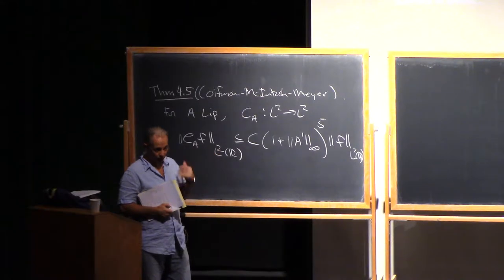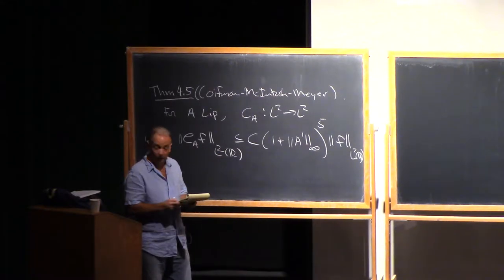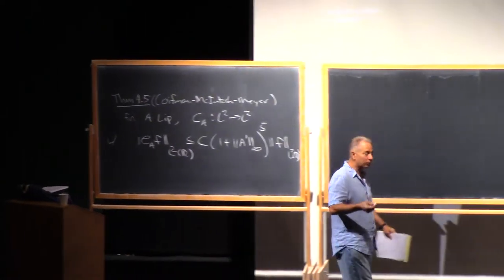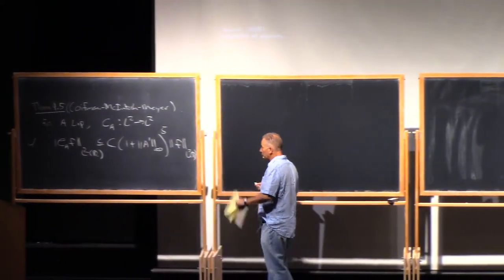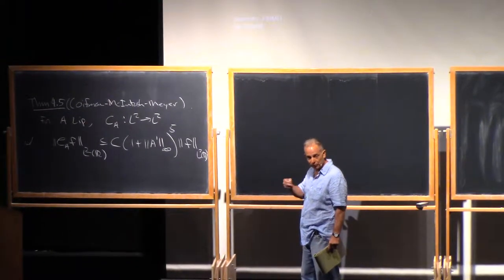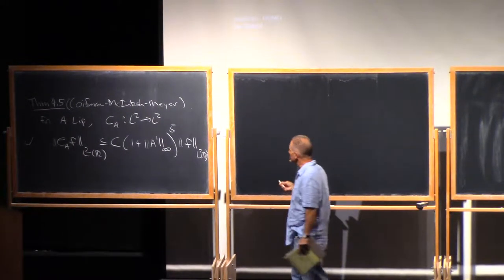So you recall that as a consequence of the exercise that you did yesterday, we already know that this is true, provided that the Lipschitz constant was sufficiently small. But Koifman, McIntosh, and Maier removed the smallness condition. So we're going to deduce this using the T of B theorem for square functions that we proved yesterday, the theorem of Sems.